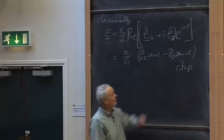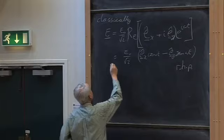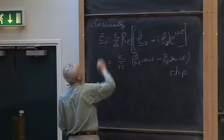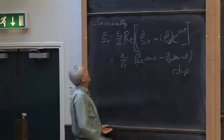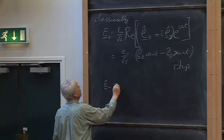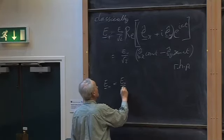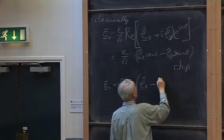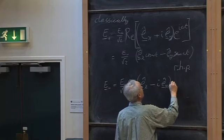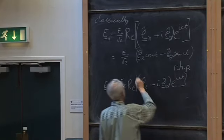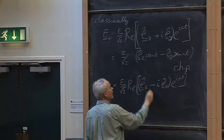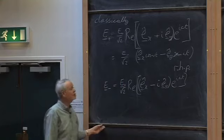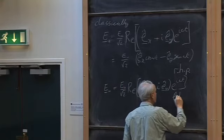Similarly, we denote by E⁻ the left-hand circularly polarized beam, which corresponds to changing the plus i to minus i. We get a change in the sense of rotation just by that sign change — this is the left-hand polarized case.